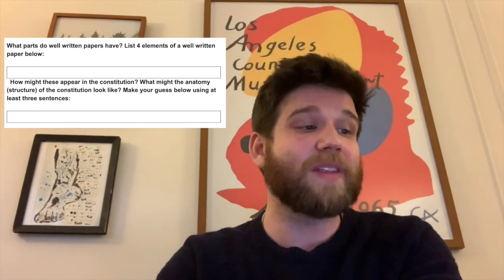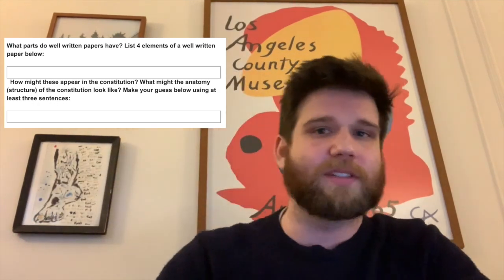So for this, we're going to be talking about what is the anatomy of the U.S. Constitution. But before we do that, our warm-up is to write down four elements of a well-written paper. What would be the anatomical design of a well-written paper? After that, you are going to think about the Constitution — we have already discussed it a fair amount — so what do you think the construction might look like? This is a prediction; you don't need to have the right answer. This is just a best guess. Make sure it is at least three sentences long.